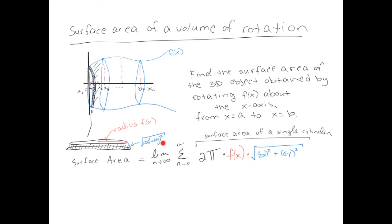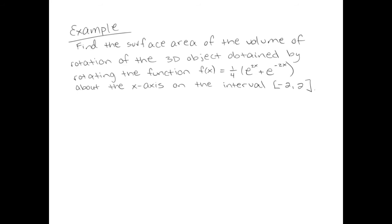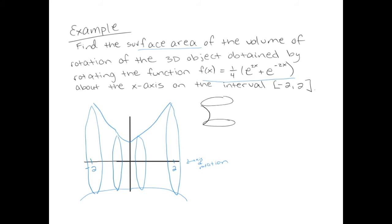The surface area would equal the limit as n goes to infinity of the sum of the surface area of each tiny little cylinder. The surface area of a cylinder is 2π times the radius times the height. We transition this into an integral formula — the piece under the square root, Δx squared plus Δy squared, is the same one we already dealt with for arc length. That gives us the integral formula we're going to use for the surface area of a volume of rotation. Here's our example: we're going to find the surface area of the 3D object obtained by rotating a particular function around the x-axis on the interval minus 2 to 2. The function looks something like this, and we're finding the surface area of it.